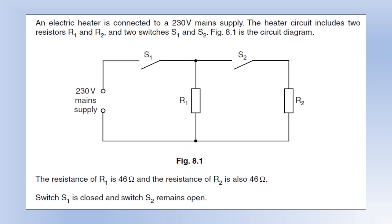We're going to look at some electric fields and electricity past exam type questions. We've got an electric heater connected to a 230 volt main supply. The heater circuit includes two resistors R1 and R2, and switches S1 and S2 like we can see.